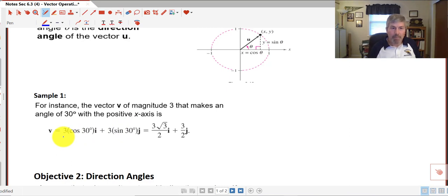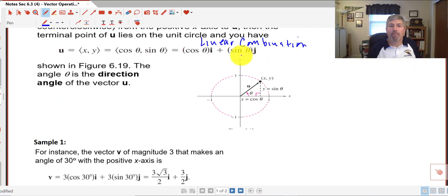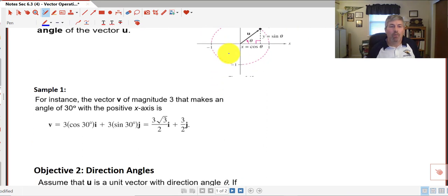Our magnitude 3, remember our linear combination form of the unit vector cosine theta i plus sine theta j. We added a magnitude of 3 here. So the cosine of 30 degrees from our unit circle is the square root of 3 over 2i.